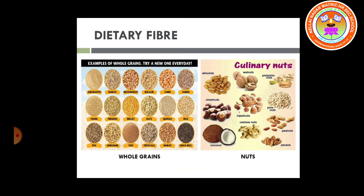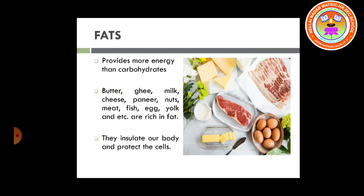Dietary fibers — we get carbohydrates from dietary fibers such as whole grains and nuts. When we take in all these forms, we get the complete benefit of carbohydrates. Our basic nutrient — the basic need for our body — is carbohydrate, which helps give us energy. Carbohydrate is an energy-giving component; when we take in all these food items, we get energy.